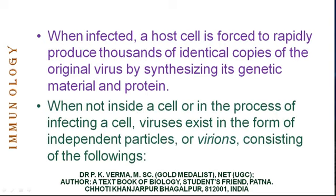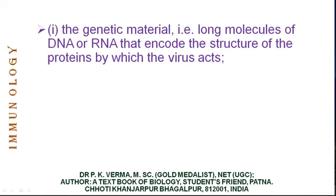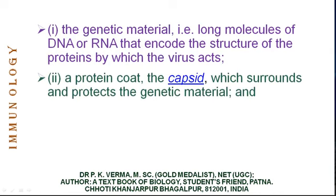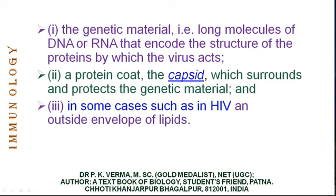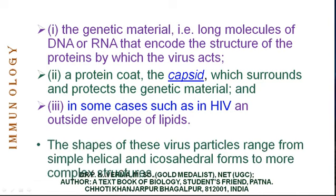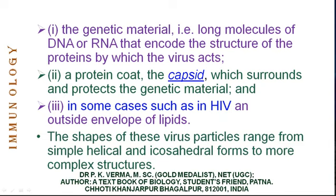When infected, a host cell is forced to rapidly produce thousands of identical copies of the original virus by synthesizing its genetic material and protein. When not inside a cell or in the process of infecting a cell, viruses exist as independent particles or virions consisting of: the genetic material — a long molecule of DNA or RNA that encodes the structure of proteins by which the virus acts; a protein coat called the capsid that surrounds and protects the genetic material; and in some cases, such as in HIV, an outside envelope of lipid. The shape of these viral particles ranges from simple helical and icosahedral forms to more complex structures.